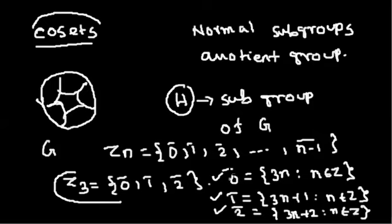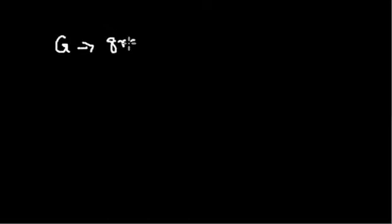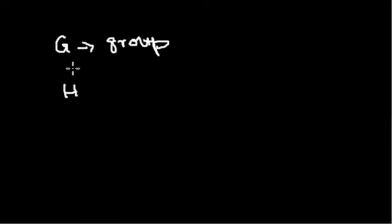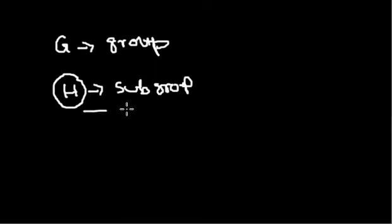A similar type of idea we are going to use here. Instead of learning the whole group G directly, we are going to learn the group G in some indirect way — by using a subgroup H and learning about its cosets.